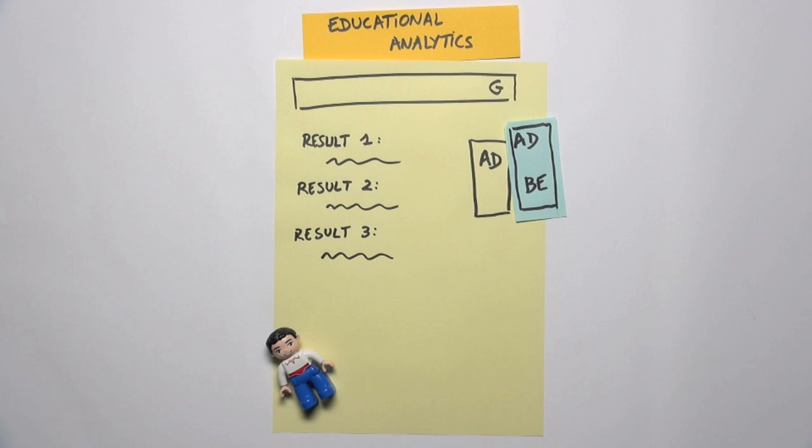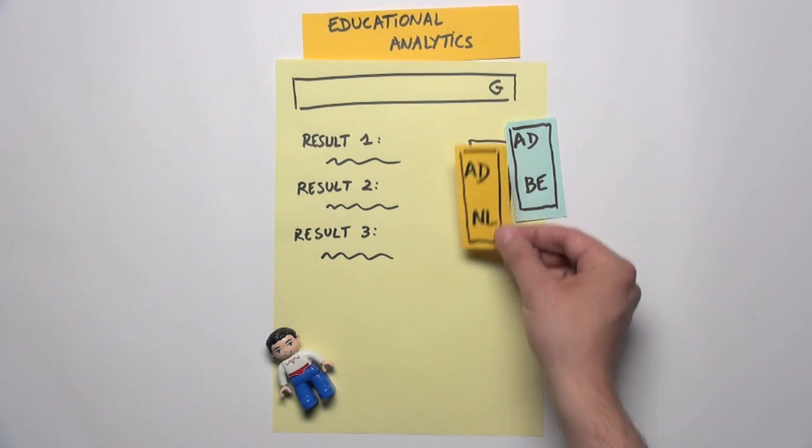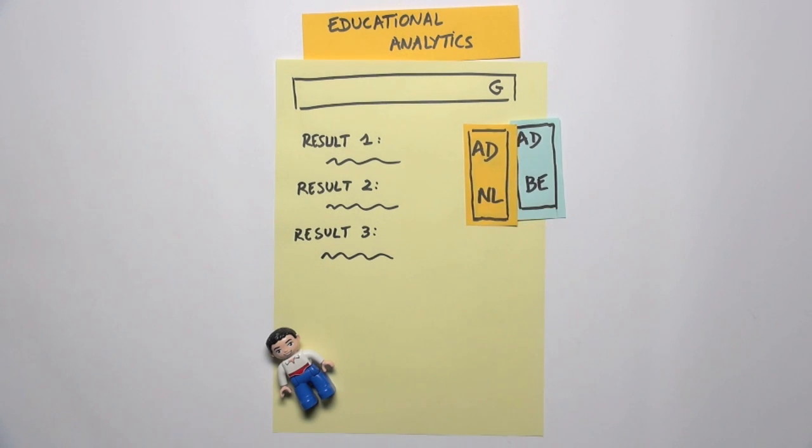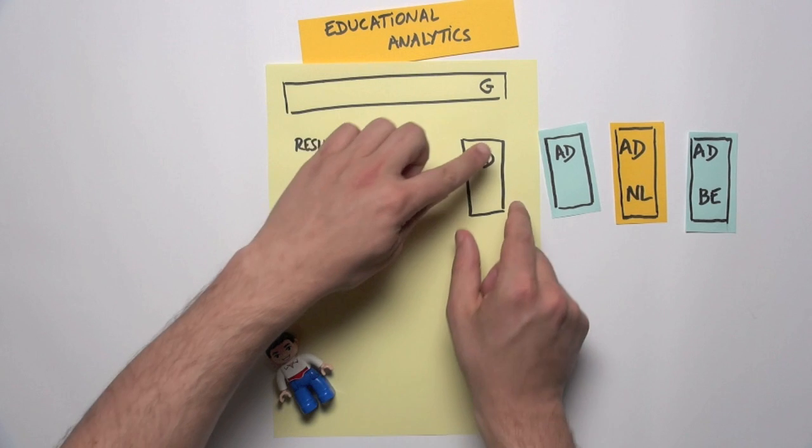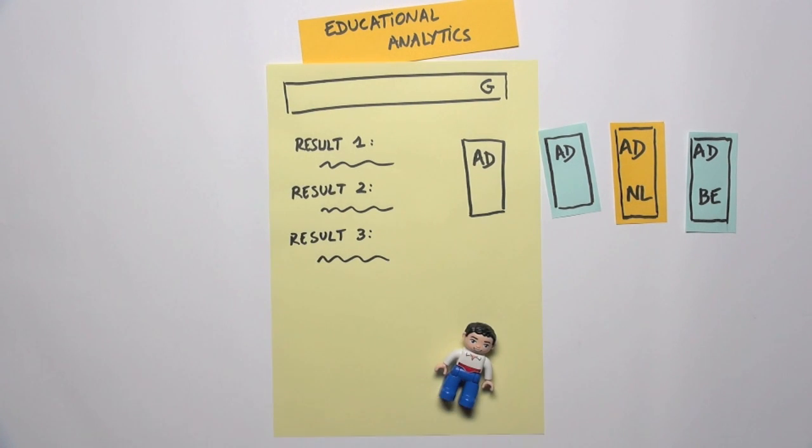And then you can compare those users to other users where the experiment was not performed. Maybe you can also pick another country, say the Netherlands, and do the same experiment with another color, say orange. Or you can try changing the size of the ads, or all at the same time fitting each user into their own highly individualized blend of experiments.